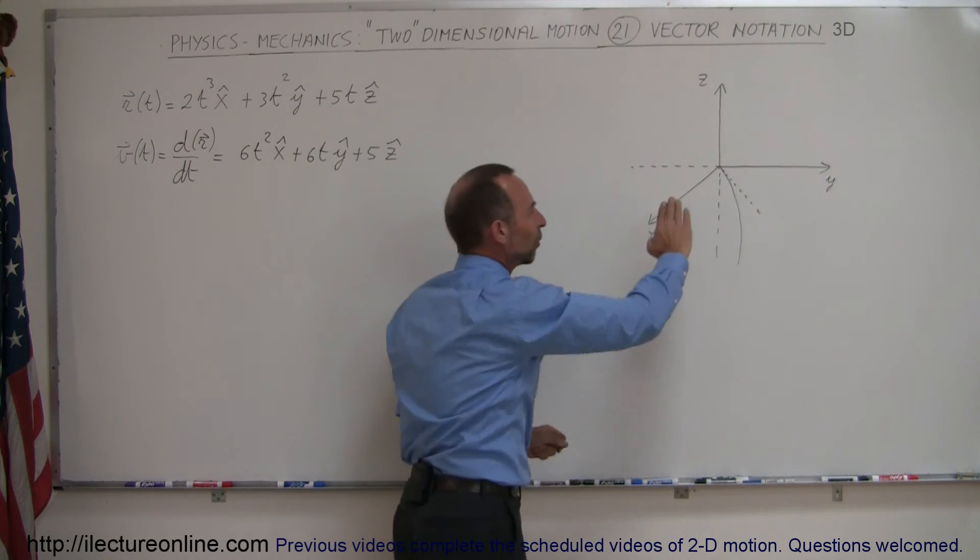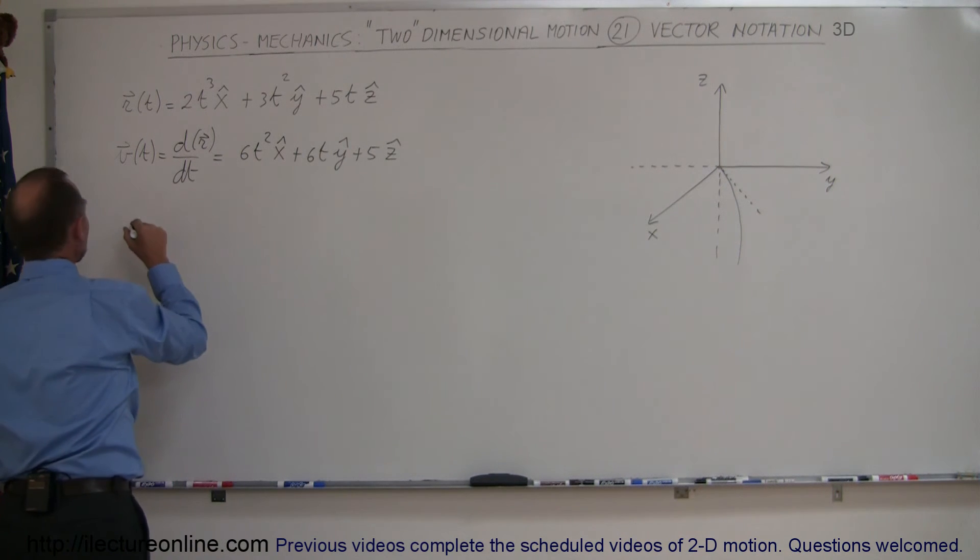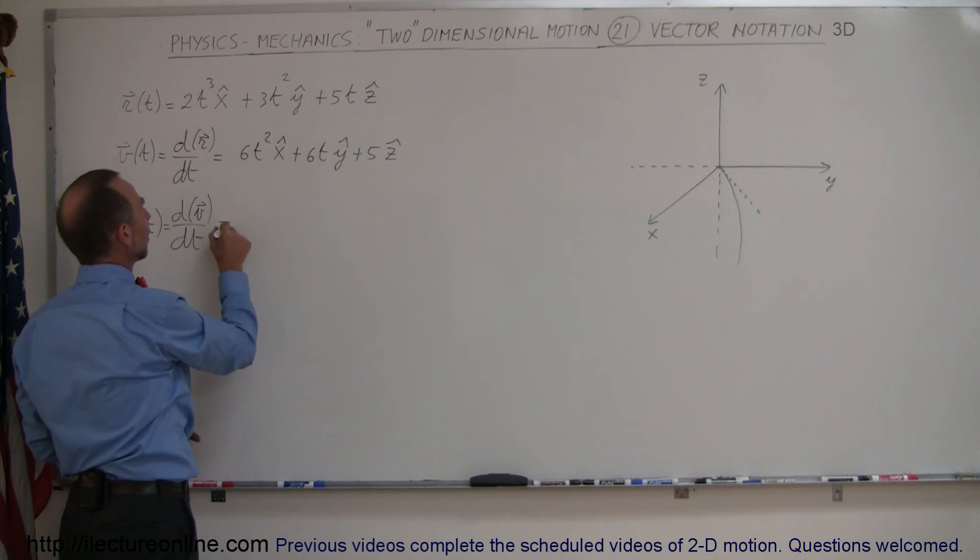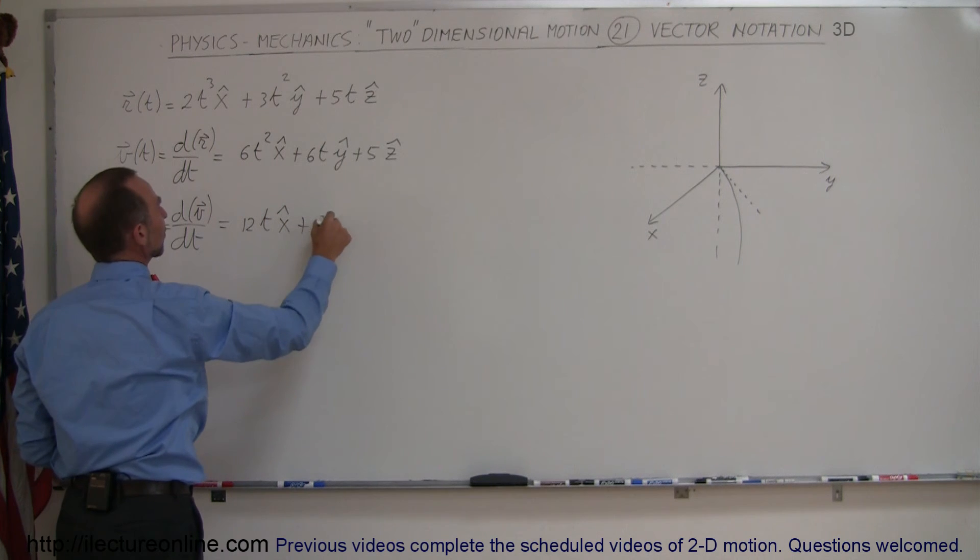It's very difficult to draw but hopefully you can get a feel for that. Now let's take the equation and take the derivative again to find the acceleration as a function of time. So we're going to take the derivative of the velocity vector.